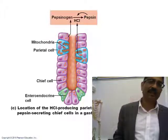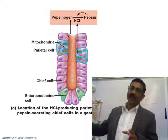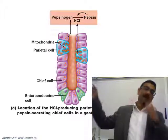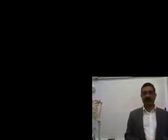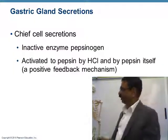Enteroendocrine cells secrete hormones that stimulate the chief cells and parietal cells to secrete pepsin and hydrochloric acid. The enteroendocrine secretion stimulates other cells directly, because those cells are all inside the gland. Some enteroendocrine secretion also enters the blood and comes back to stimulate the other gastric gland cells.